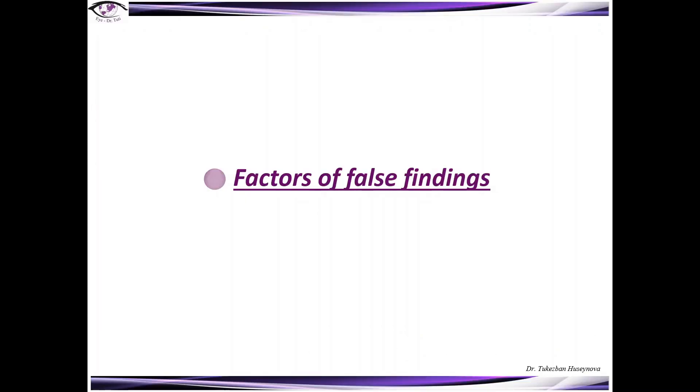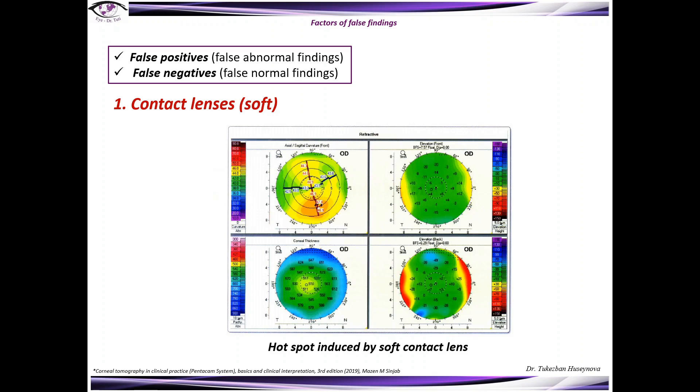Factors of false findings can be positive and negative. False positives or false abnormal findings lead to overestimation of clinical findings. False negatives or false normal findings lead to underestimation of clinical findings.